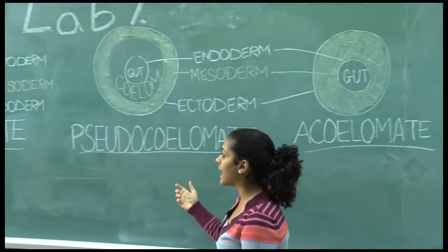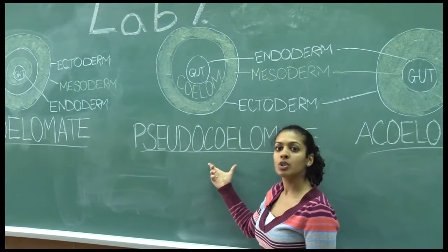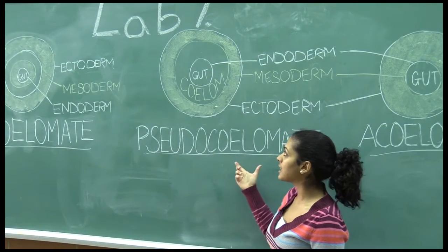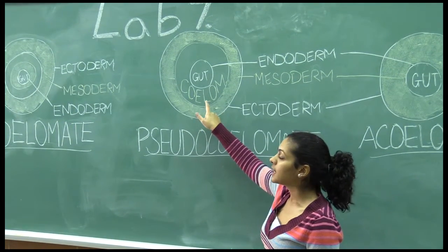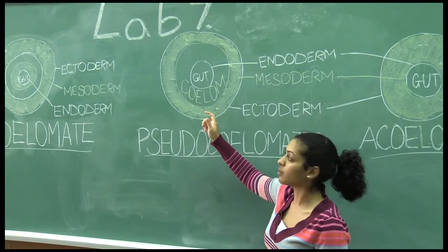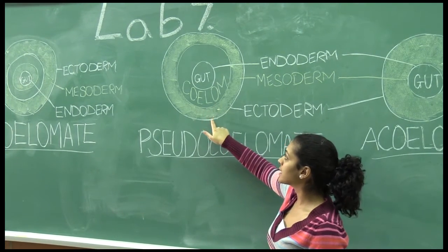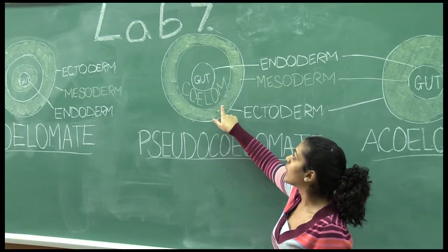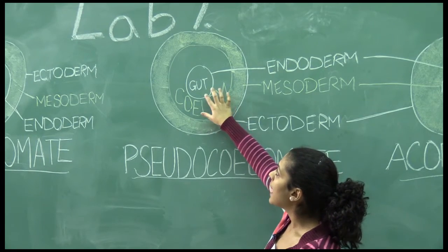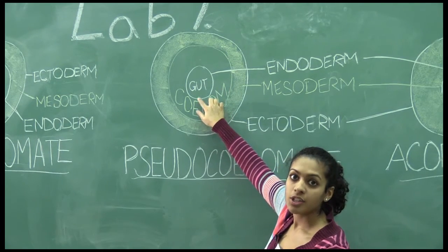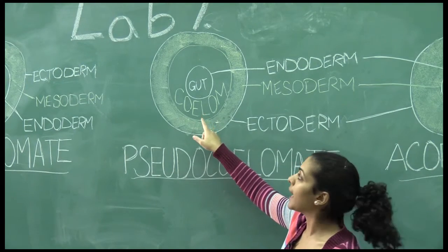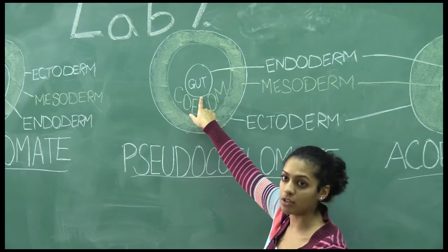Moving on, you then have a pseudocoelom. Pseudocoelom means false — it is called a false coelom because traditionally the coelom is surrounded by mesoderm on both sides. In a pseudocoelom, you have the ectoderm, you have the mesoderm, followed by the fluid-filled or air-filled cavity called the coelom, and then the endoderm. So again, pseudocoelom because the coelom is surrounded by mesoderm and endoderm.